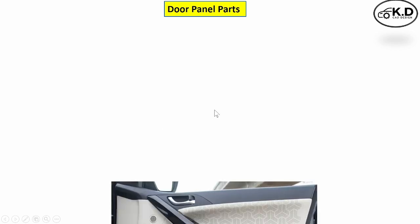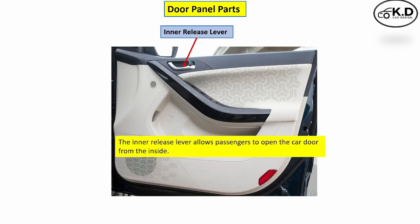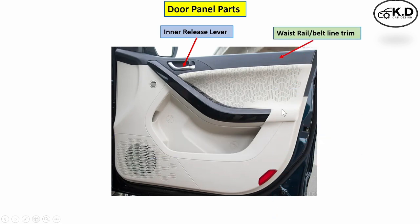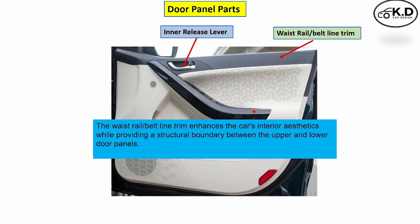Next we will see the parts of the door panel. The first part is the inner release lever, which allows the passenger to open the door from the inside. The next part is the waist rail or belt line, whose function is to cover and enhance the upper area of the door, providing aesthetic and structural protection.